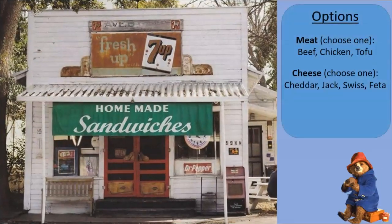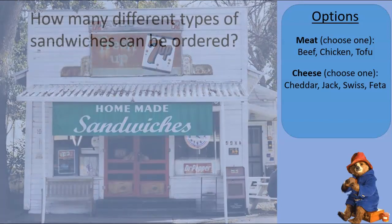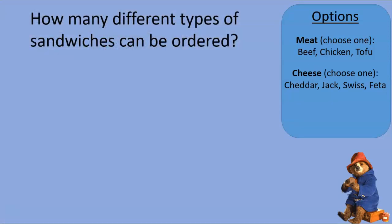Suppose you come to the shop and your options are limited. You can choose what kind of meat you want — beef, chicken, or tofu — and what kind of cheese — cheddar, jack, swiss, or feta. You must have exactly one of each; if you don't want cheese, for example, they won't serve you. The question is: how many different types of sandwiches can be ordered?